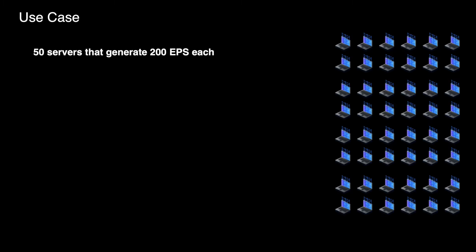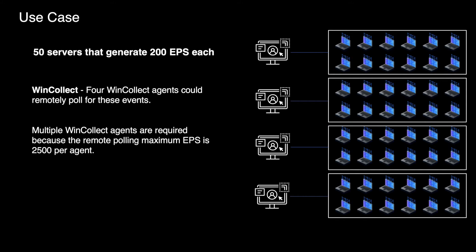Let's take a scenario where we have 50 servers that generate 200 EPS each, which means 10,000 events are generated per second to be sent to IBM QRadar. In this case, we need multiple WinCollect agents. The maximum EPS that can be collected by a WinCollect agent in remote pulling is 2,500 EPS. Hence, in this scenario, we may need 4 WinCollect agents which can remotely pull events.